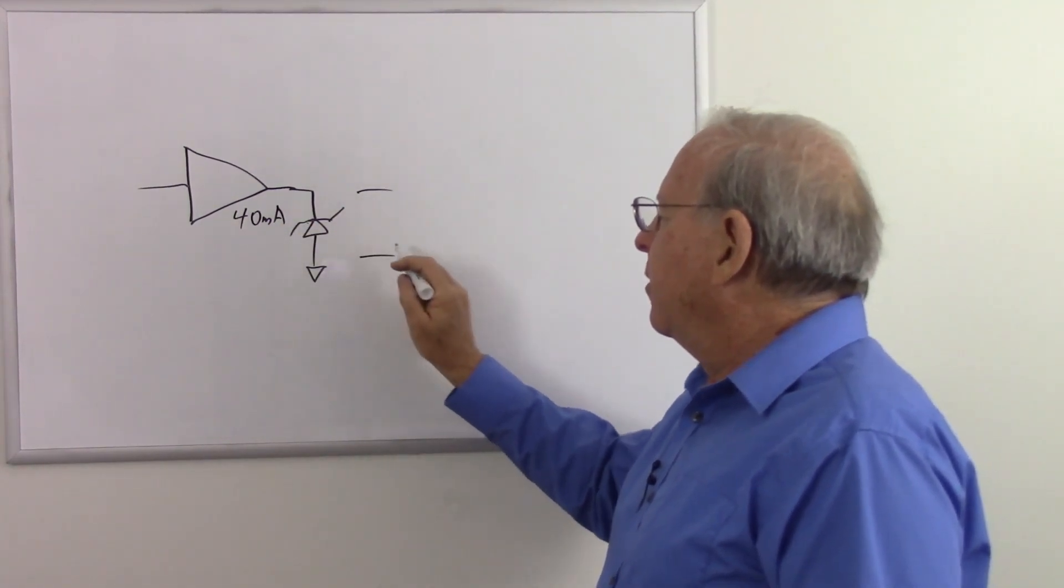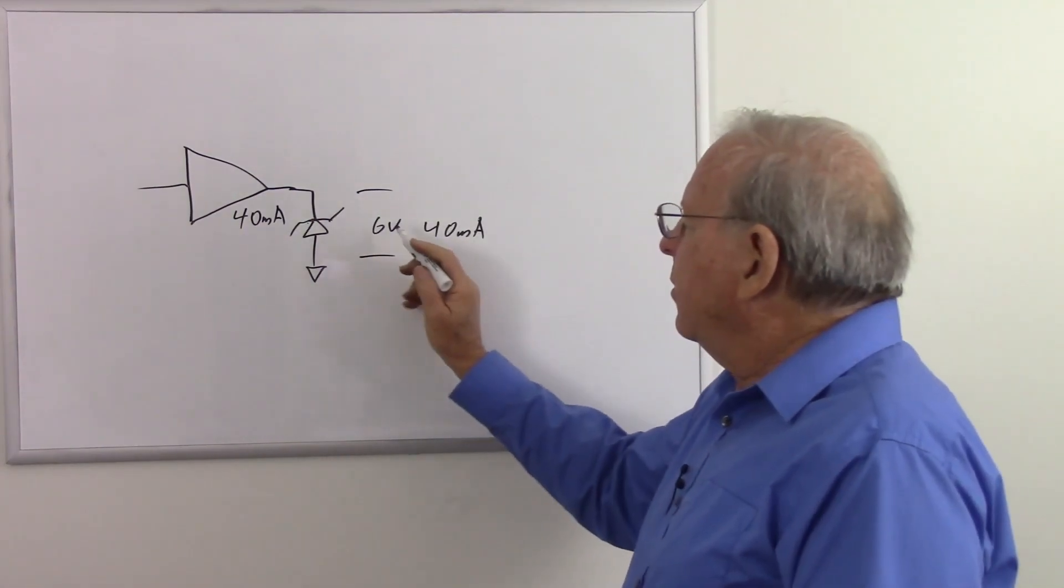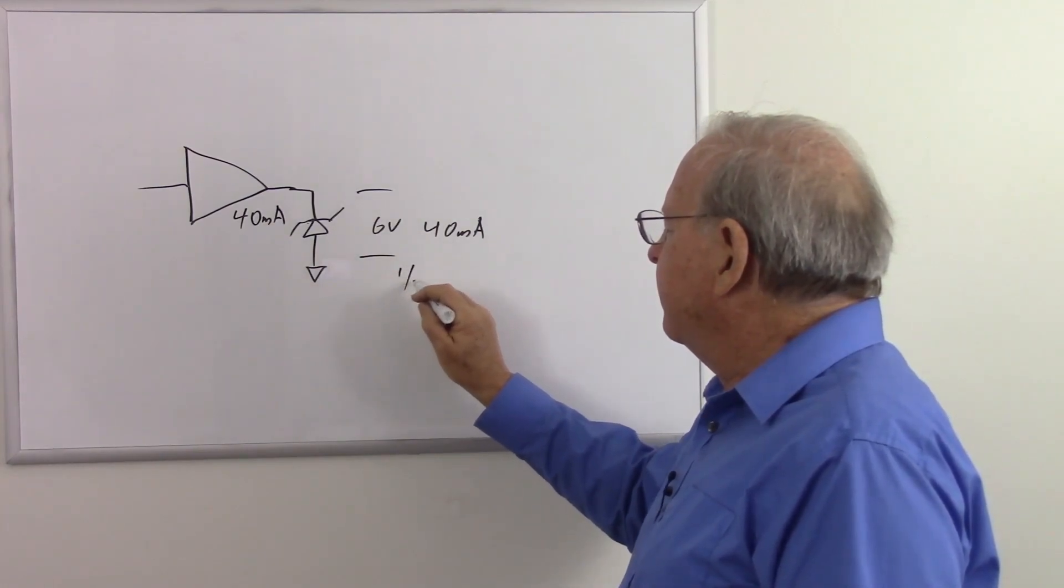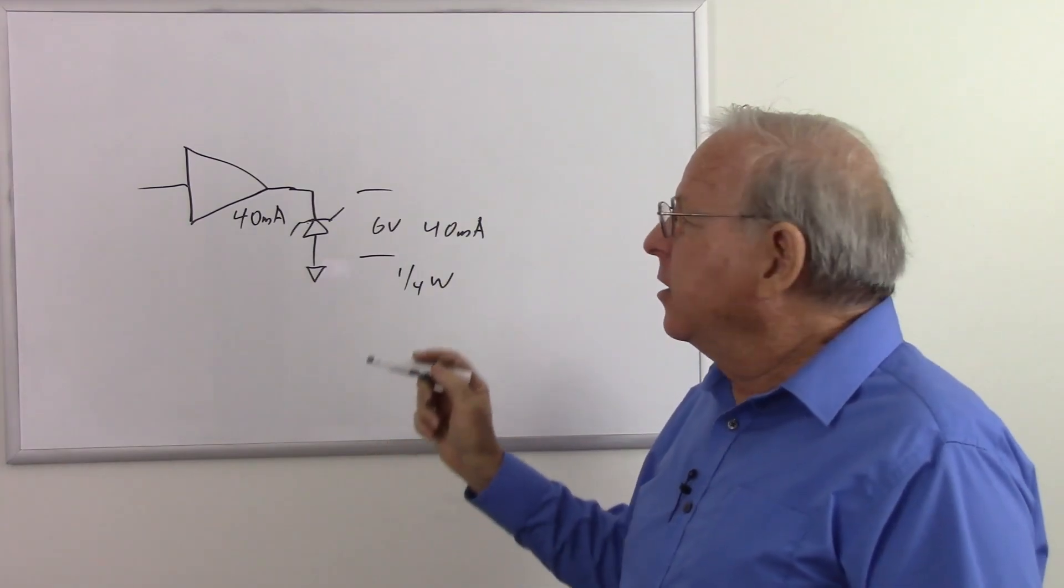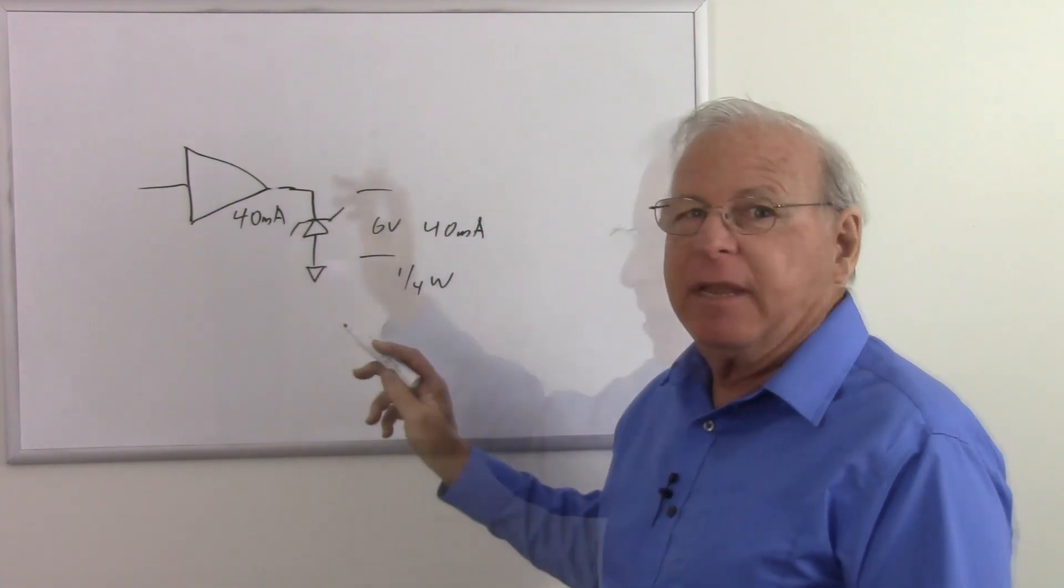That's probably not going to hurt it. Let's see. Let's put there again, 6 volts, 40 milliamps. So 6 volts times 40 milliamps is going to give me about a quarter watt. So yeah, no problem there. So you don't need the resistor if your voltage source has a high enough output impedance.